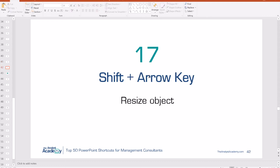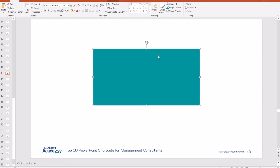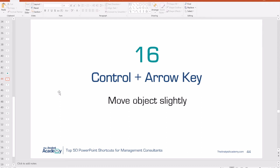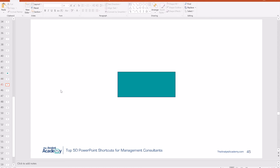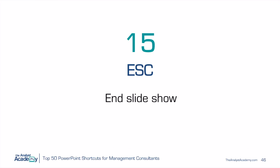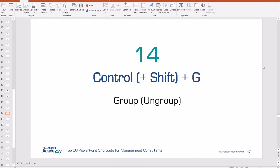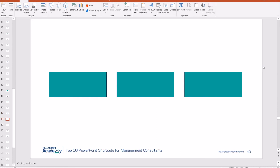Number 17: Shift plus arrow key allows you to resize an object without using your mouse. With the object selected, hold Shift and push up to make it taller, right to make it wider, left to make it smaller, or down to make it shorter. Number 16: Control plus arrow key allows you to move an object very slightly along the page in very small increments. Number 15: Escape — in presentation mode, Escape lets you exit the presentation, and it also gets you out of many other things in PowerPoint.